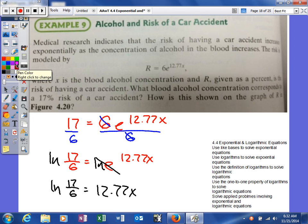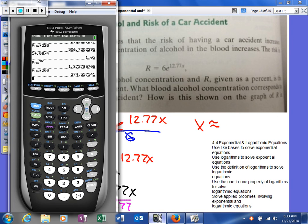Our next step in solving this problem is to divide by 12.77. When we do that, we will get x approximately equal to... and we'll use our calculator to come up with what it would be as a decimal.